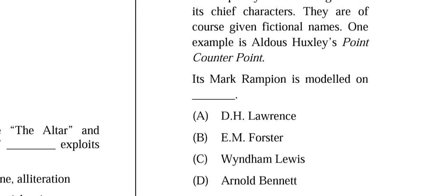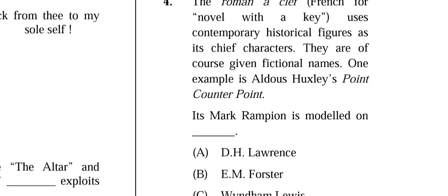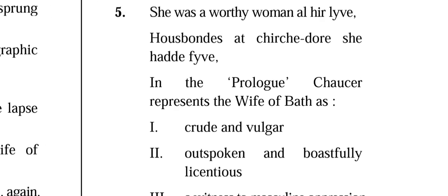Question 4: The roman à clef, a novel with a key, uses contemporary historical figures as its chief characters under fictional names. One example is Aldous Huxley's 'Point Counterpoint,' where Mark Rampion is modeled on whom? The correct answer is (A) D.H. Lawrence.